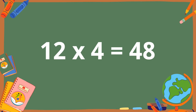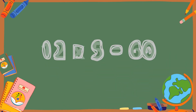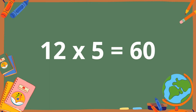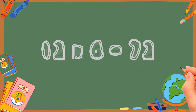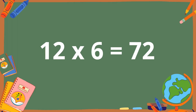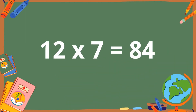12 fours are 48. 12 fives are 60. 12 sixes are 72. 12 sevens are 84.